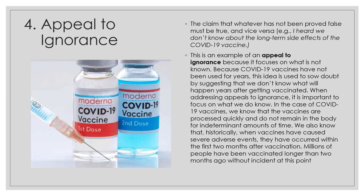Next, we have appeal to ignorance — a claim that whatever has not been proved false must be true, or vice versa. For example: we don't know about the long-term side effects of the COVID-19 vaccine. This appeals to ignorance by focusing on what is not known. Because COVID-19 vaccines have not been used for years, this sows doubt by suggesting we don't know what will happen years after vaccination. When addressing appeals to ignorance, focus on what we do know — vaccines are processed quickly and do not remain in the body for indeterminate amounts of time. Historically, when vaccines have caused severe adverse effects, they've occurred within the first two months after vaccination, and millions of people have been vaccinated longer than two months ago without incident.